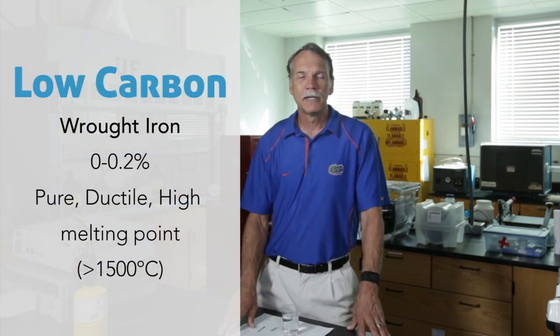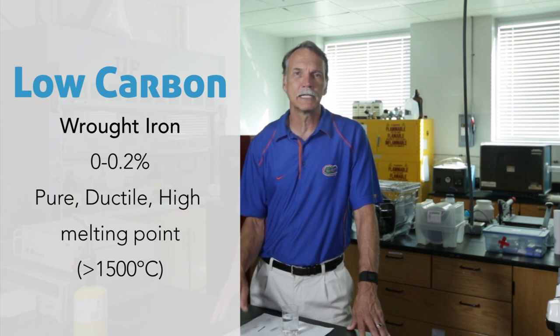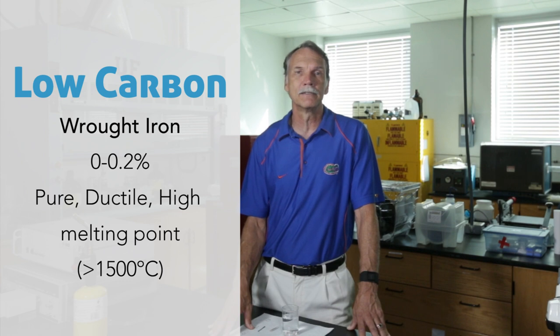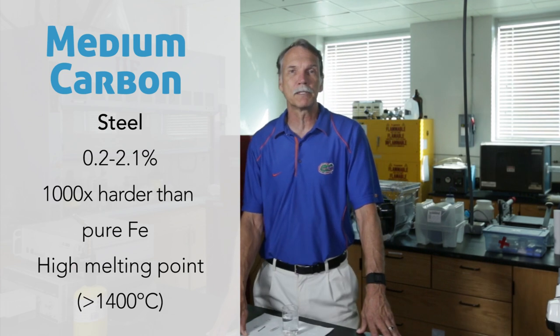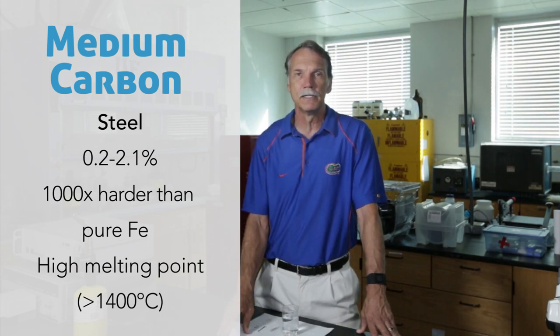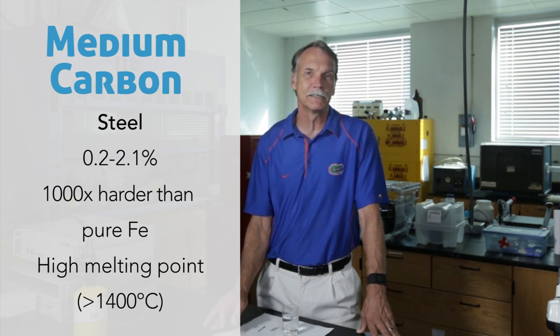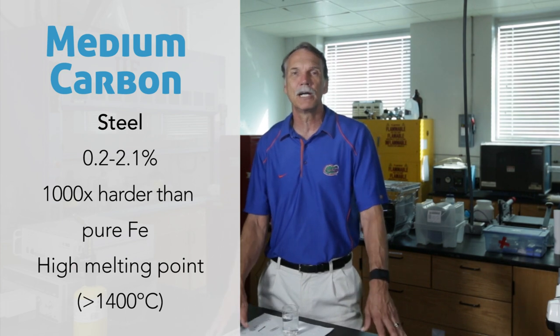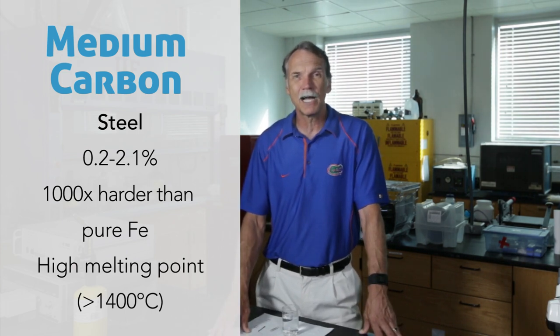There are several different forms of iron. Low-carbon iron is called wrought iron, with something between zero and 0.2% carbon. This form is very ductile, typically pure, and has a very high melting point, making it hard to melt. The next phase is steel, with between 0.2% and 2.1% carbon — still a very small amount — and steel is extremely hard, up to a thousand times harder than pure iron, though it also has a very high melting point.